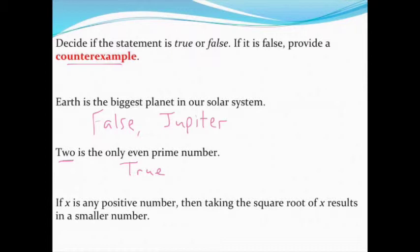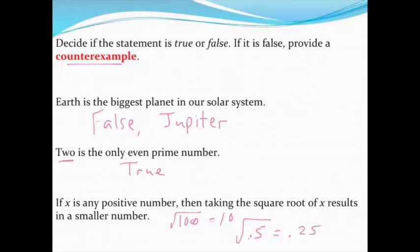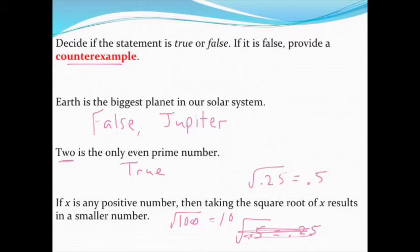Finally, 'if x is a positive number, then taking the square root of x results in a smaller number.' Trying the square root of 100 gives 10 — smaller, so that's consistent with the statement. But if I try the square root of 0.25, I get 0.5 — I started with a smaller number and got a bigger number. That is my counterexample, proving the statement is in fact false.